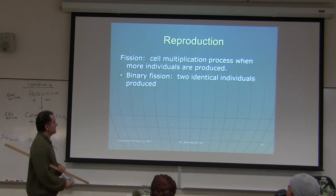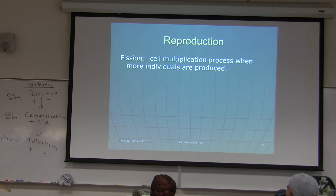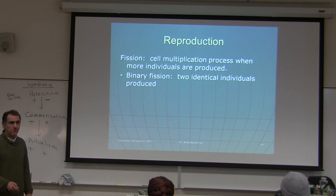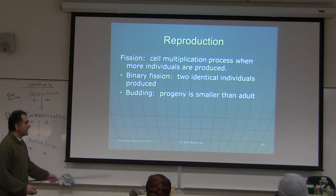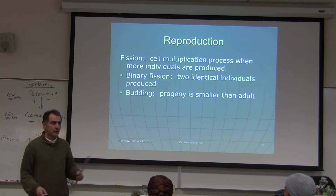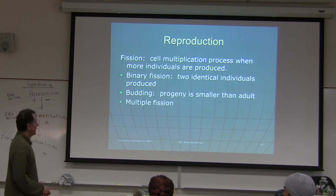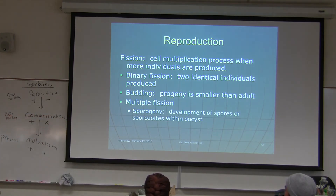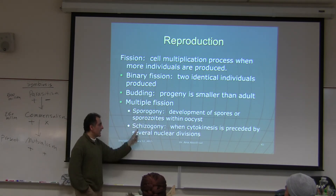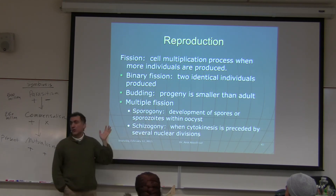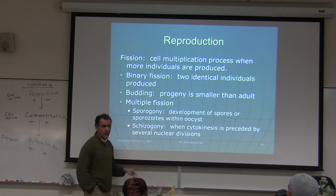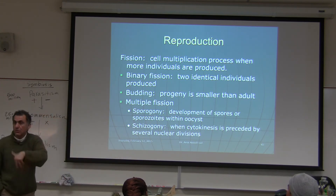Reproduction: fission is a cell multiplication process that produces more individuals. Binary fission produces two identical individuals — common in Protista. Budding is when one progeny buds off. Multiple fission also occurs; in malaria and Toxoplasma gondii life cycles, two important forms are sporogony and schizogony — you should get used to these terms.